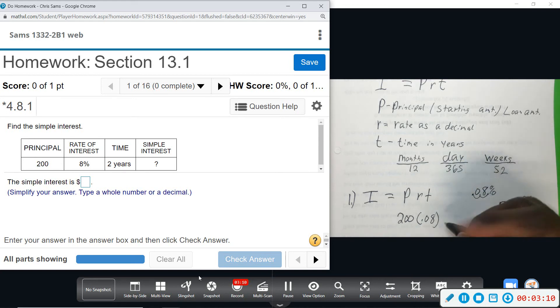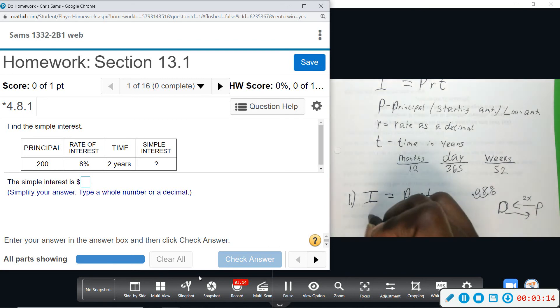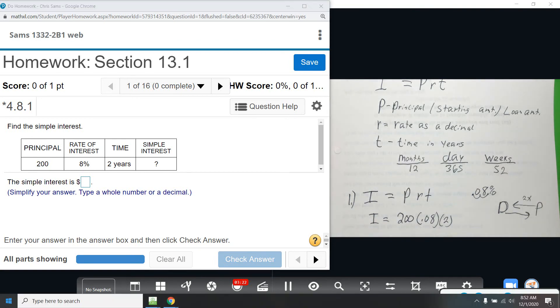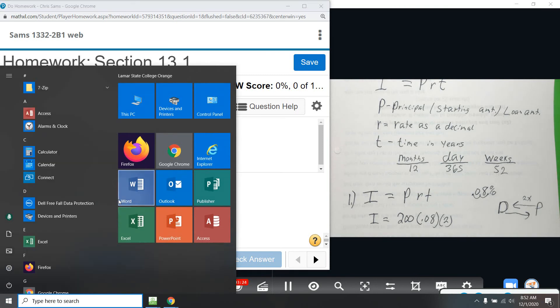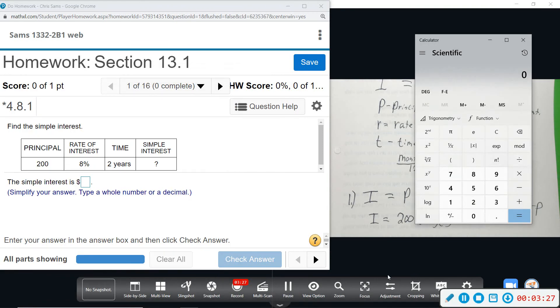So you multiply all of this together and that will give us our simple interest. So pull up calculator and we're just going to do 200 times 0.08 times two years. So the simple interest will be 32 dollars.